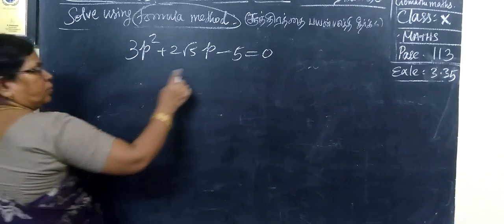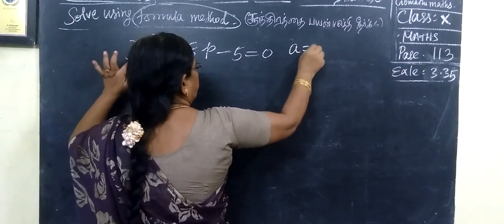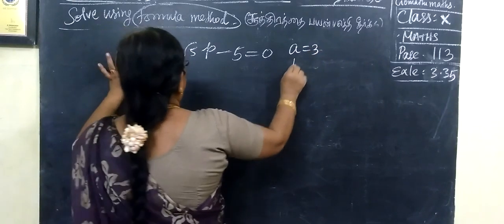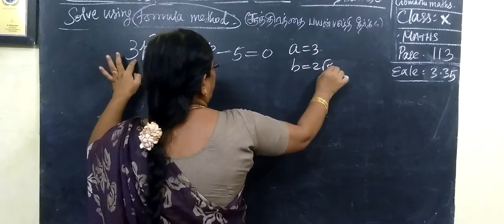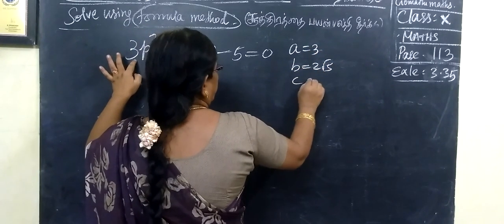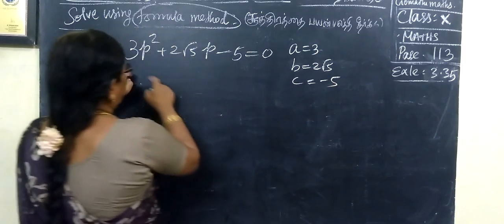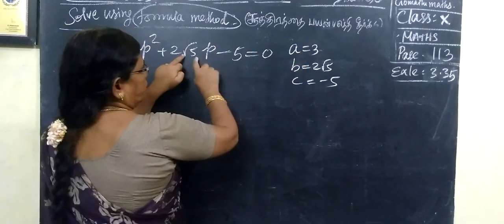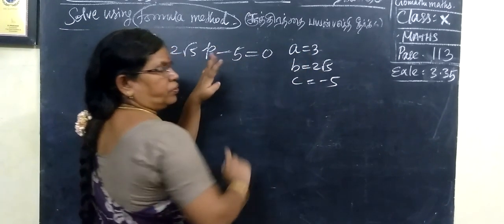As usual, a equal to 3. Then, b equal to 2 root 5, c equal to minus 5. Once again verify: a, then b — this is the same thing.